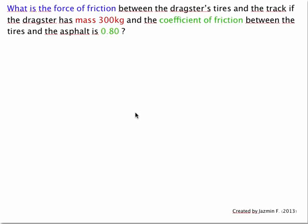Unit 4.2 Forces Question 3. What is the force of friction between the dragster's tires and the track if the dragster has mass 300 kg and the coefficient of friction between the tires and the asphalt is 0.80?